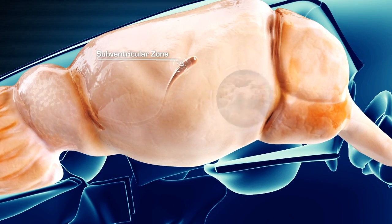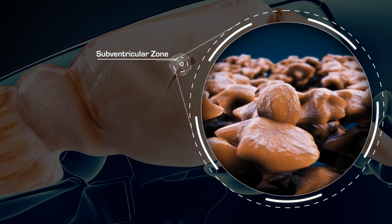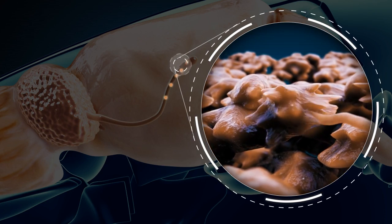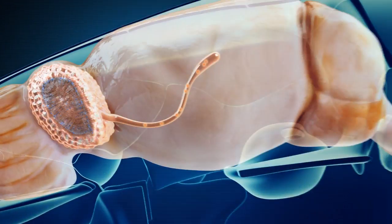The subventricular zone contains stem cells that produce 30,000 new cells per day that migrate to the olfactory bulb.